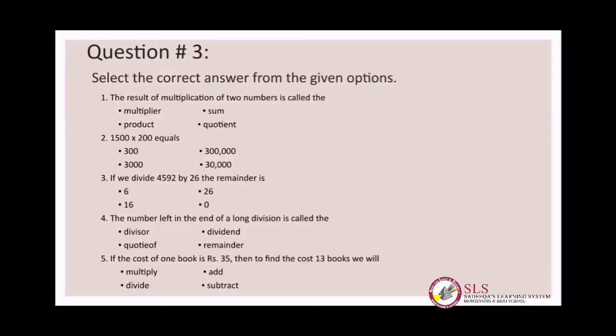This is question number three of Exercise 1C: select the correct answer from the given options. The first one: the result of multiplication of two numbers is called — multiplier, sum, product, or quotient? As we have learned, the answer of a multiplication is the product, so we will circle product.